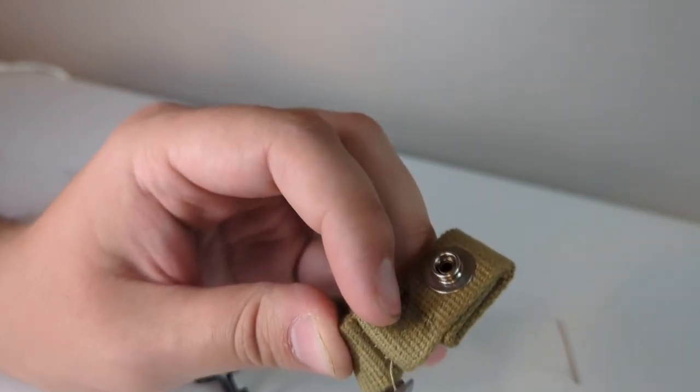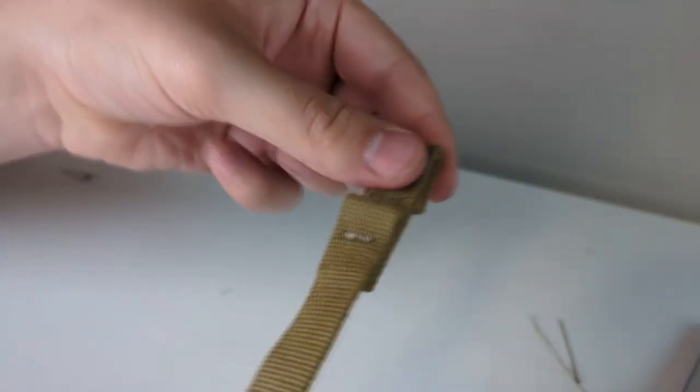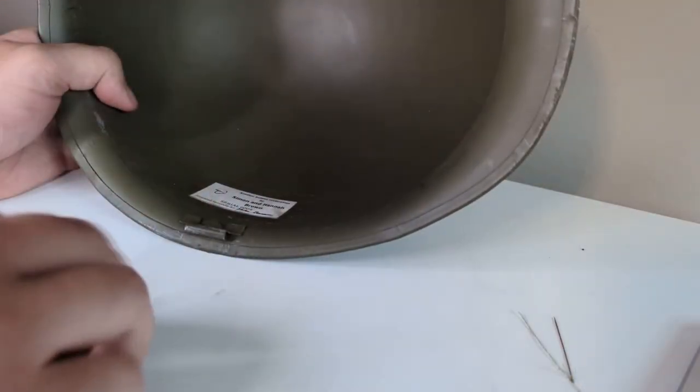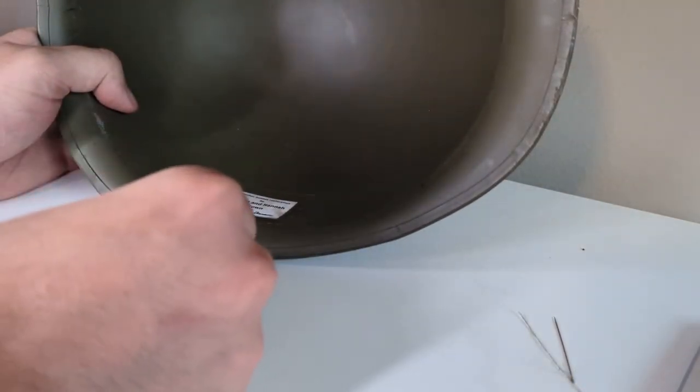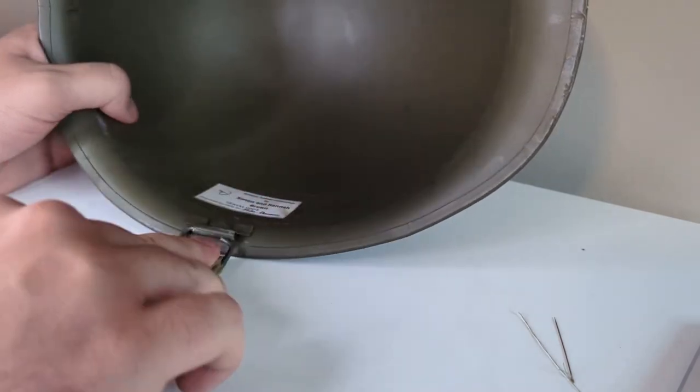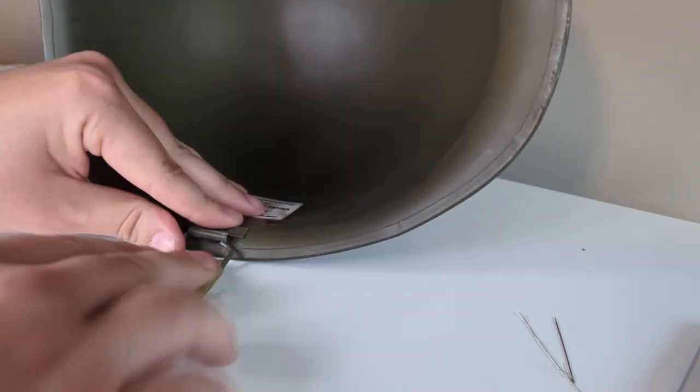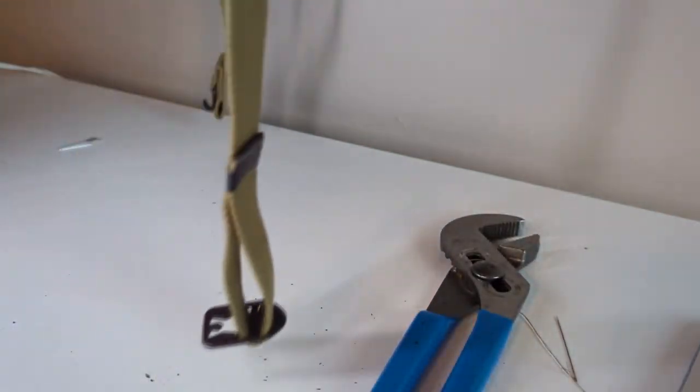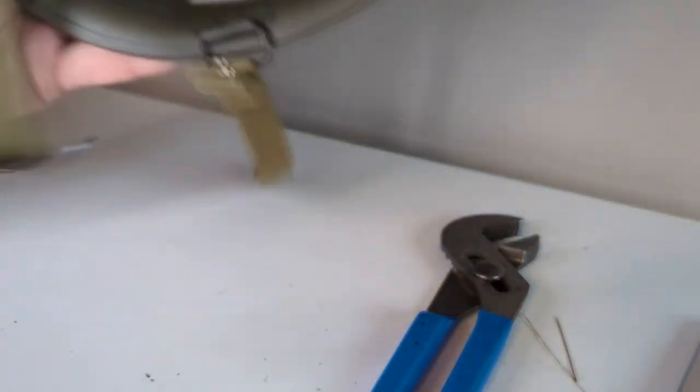If you have swivel bales, first you're going to take your swivel bales out of your helmet. That might be a little tricky, but you just need to take your swivel bales off your helmet, slide the chin strap back on, and then you can just crimp the swivel bales back into place.